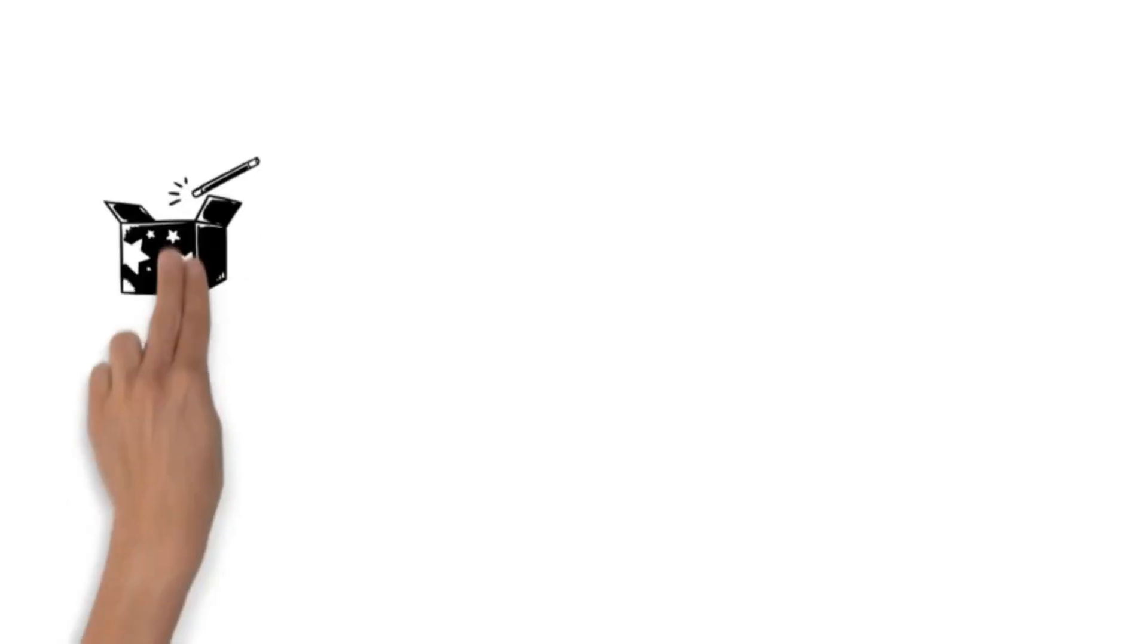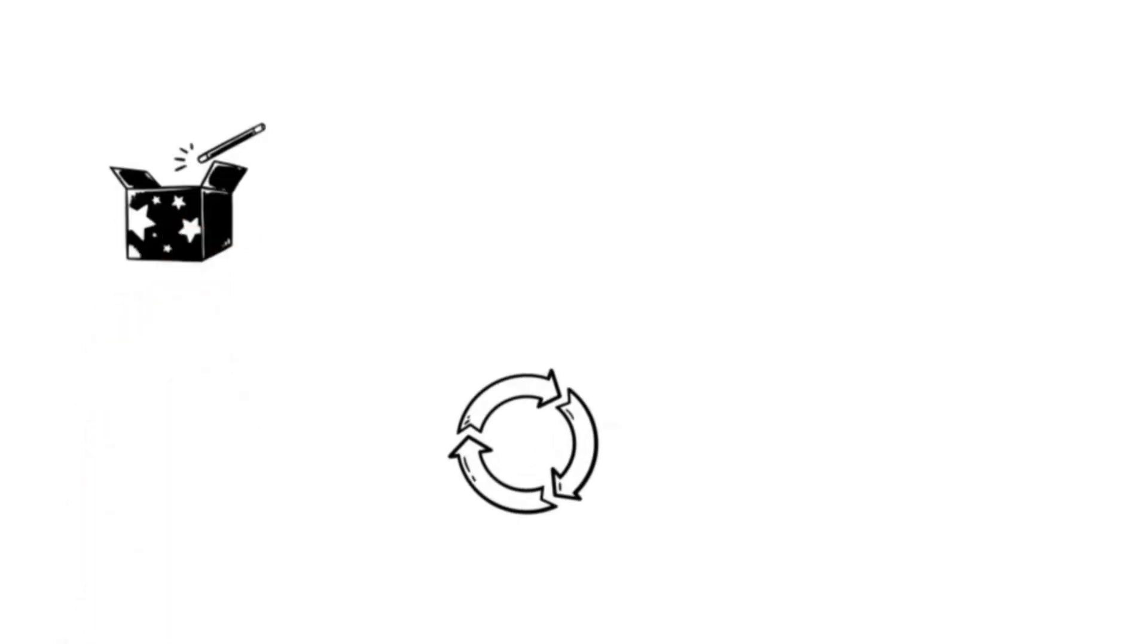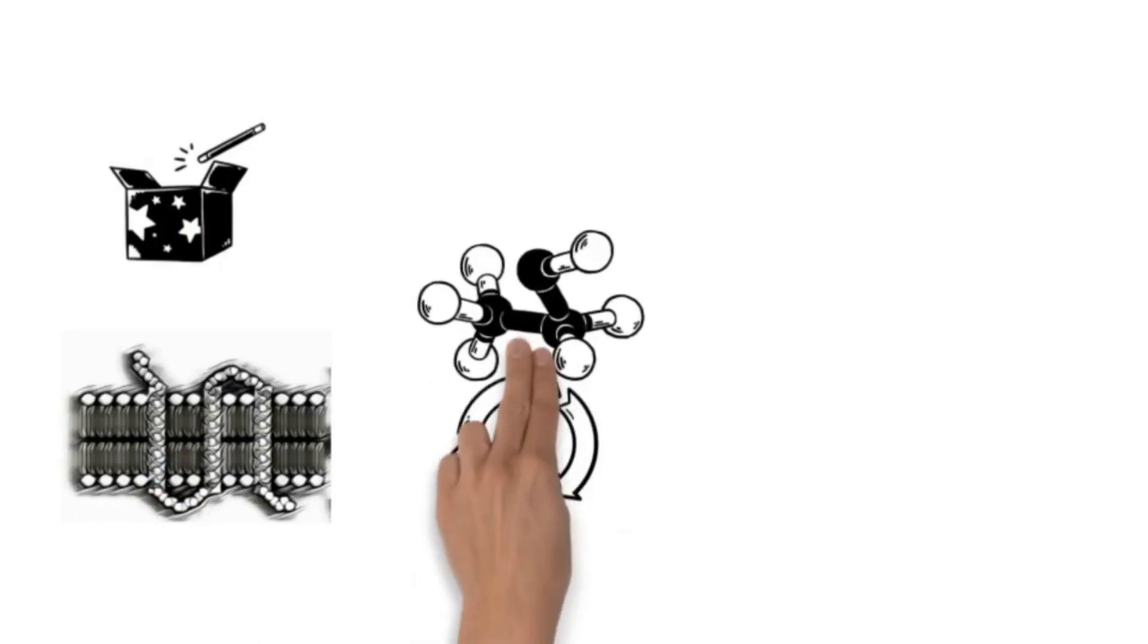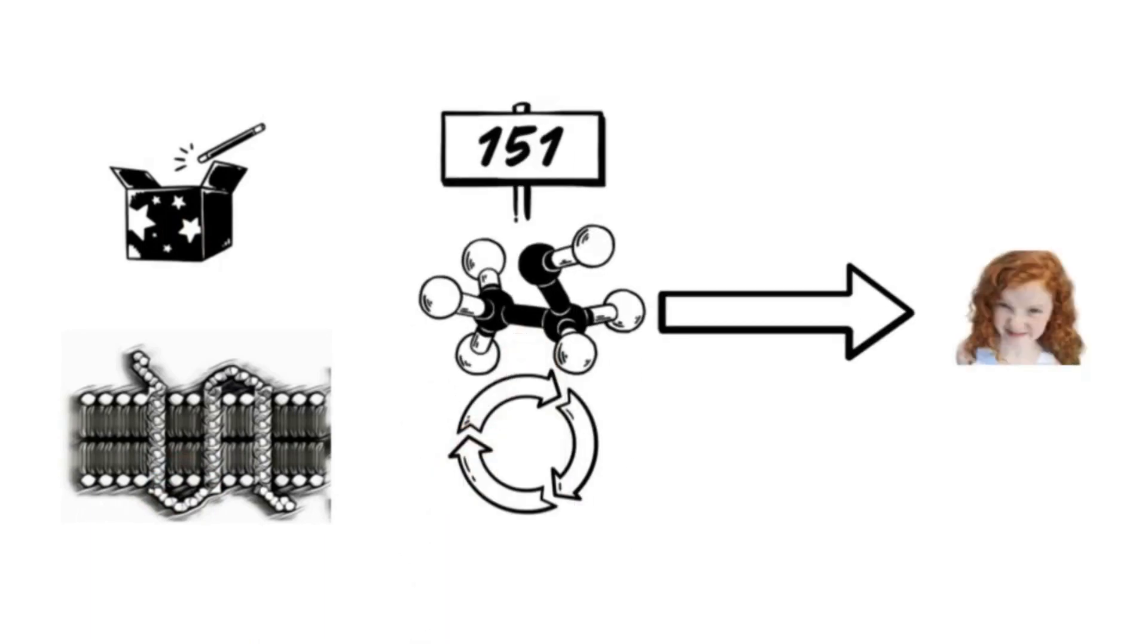But here's where the magic happens: a single change in the MC1R protein, specifically at amino acid 151, can result in red hair.